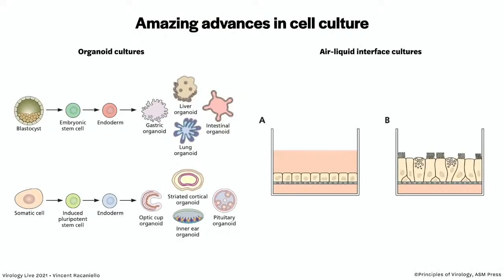Today we have even more amazing advances in cell culture — we can do things way beyond just growing cells in a monolayer on a plastic dish. For example, we can make what are called organoid cultures — little mini organs that represent stomach, lung, intestine, liver, etc. They do not have immune systems, which is a drawback, but they do have architecture representing the organ and different cell types. These are made from stem cells. You can induce stem cells to become organoids using different chemicals and make them into different organoids.